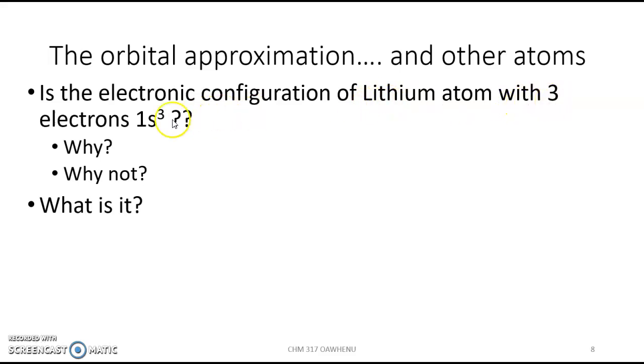For example, lithium has three electrons. Would the electronic configuration be 1s3? Well, if it's not 1s3, what is it? In the next video, we will consider the spin and Pauli's exclusion principle and the electronic configuration of lithium.